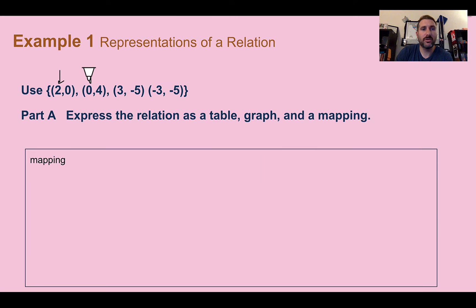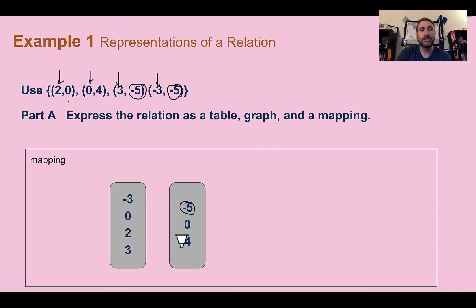For a mapping, we're going to take all the first coordinates, kind of like we did with a table, and put them in order from least to greatest on the left side. Then we're going to take all of the y-coordinates and put them from least to greatest on the right side. Notice I had negative 5 as a y-coordinate twice, but I only wrote it one time down here. We don't need to repeat the numbers. For a mapping, I just draw an arrow showing what number in the domain goes to which number in the range. So 2 goes to 0, 0 goes to 4, positive 3 goes to negative 5, and so does negative 3. And that is our relation shown as a map.